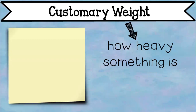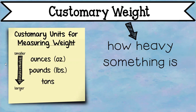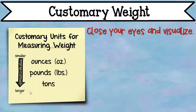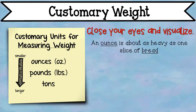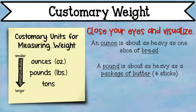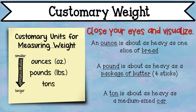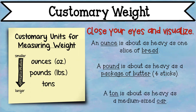Moving right along to customary weight. Weight is how heavy something is. Here's our helpful diagram. The smallest customary unit of weight is ounces, then pounds, and then tons. Let's visualize: an ounce is about as heavy as one slice of bread, a pound is about as heavy as a package of butter sticks, and a ton is about as heavy as a medium-sized car.